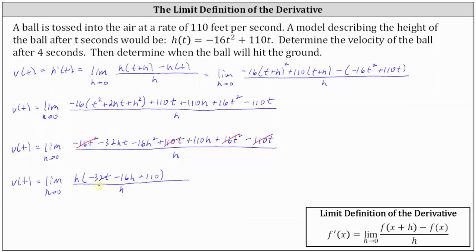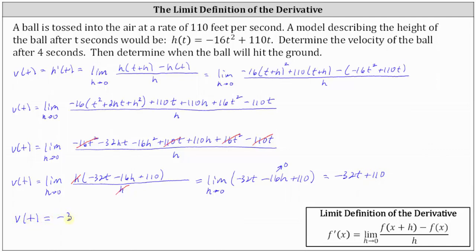Notice how we can simplify the h's now. h divided by h simplifies to one, leaving us with just the limit of negative 32t minus 16h plus 110 as h approaches zero. As h approaches zero, 16h approaches zero, giving us a limit of negative 32t plus 110. So now we know the velocity function v of t is equal to negative 32t plus 110.